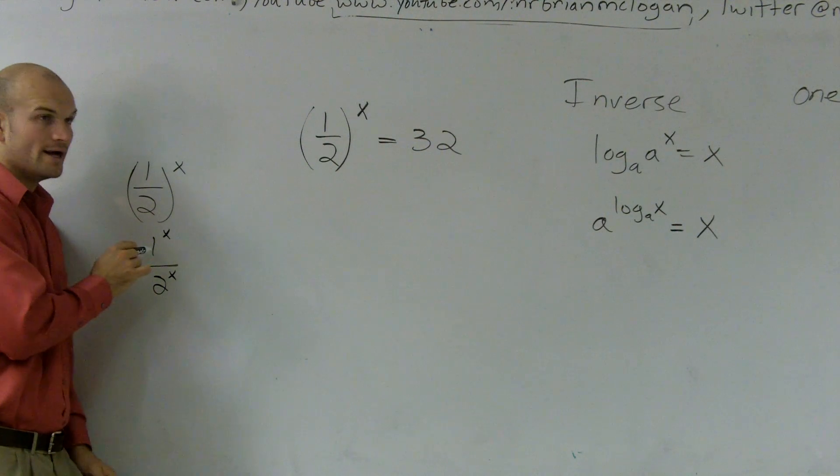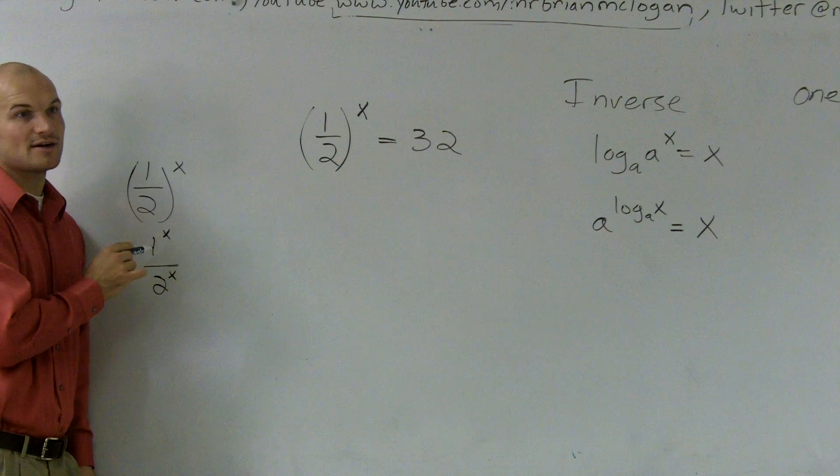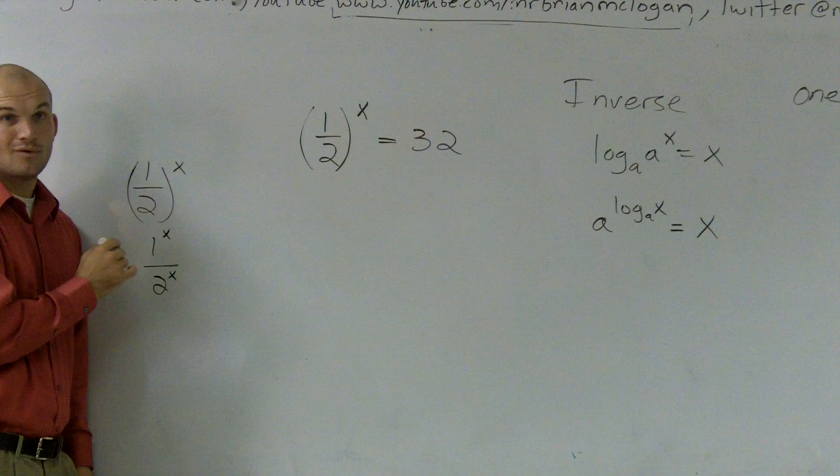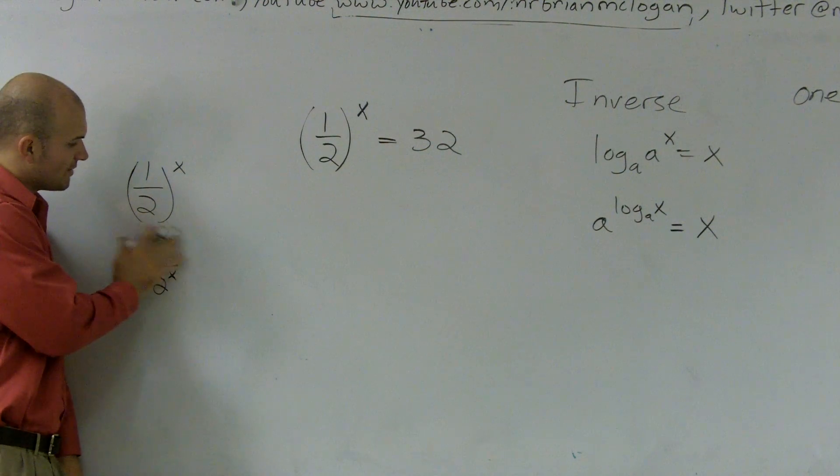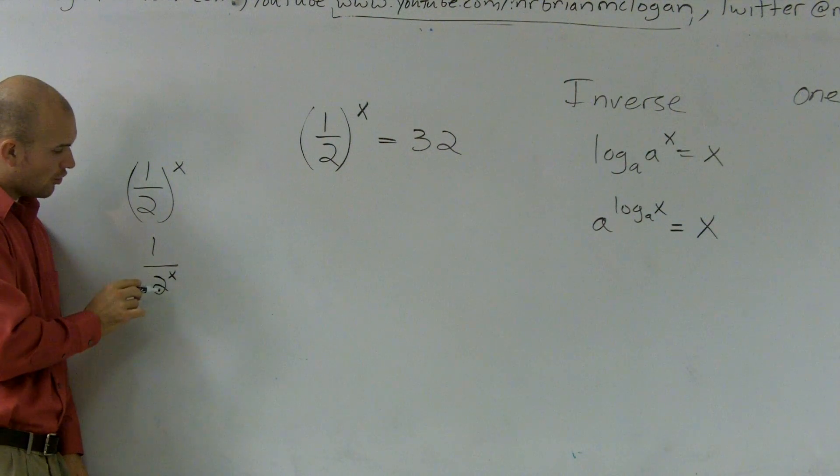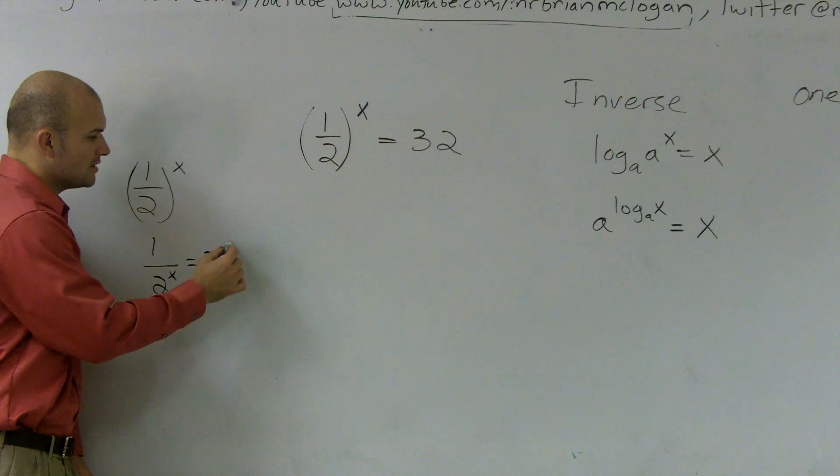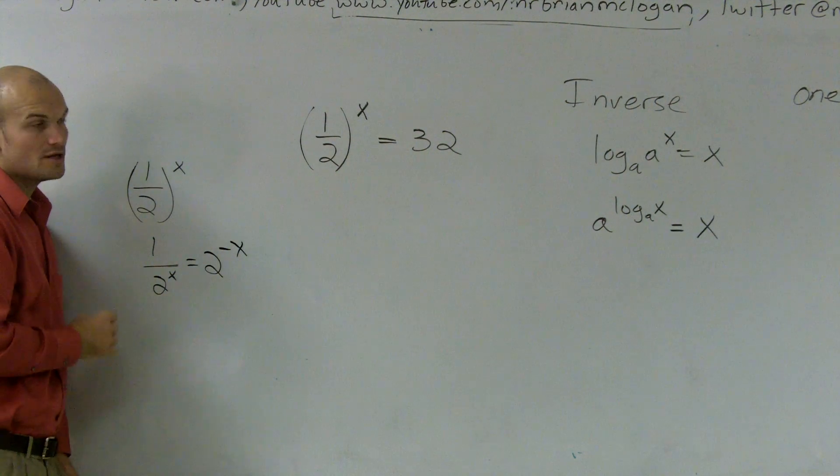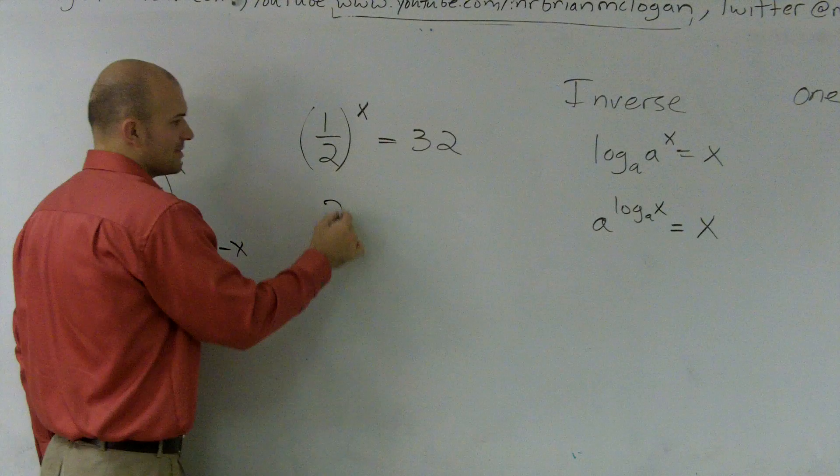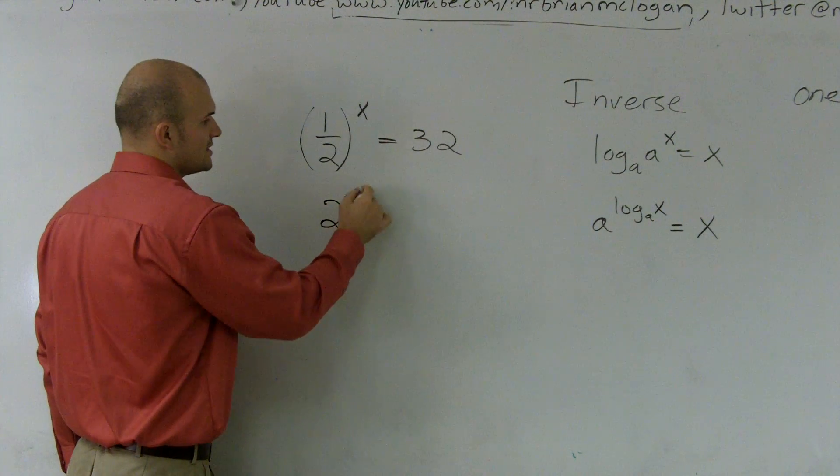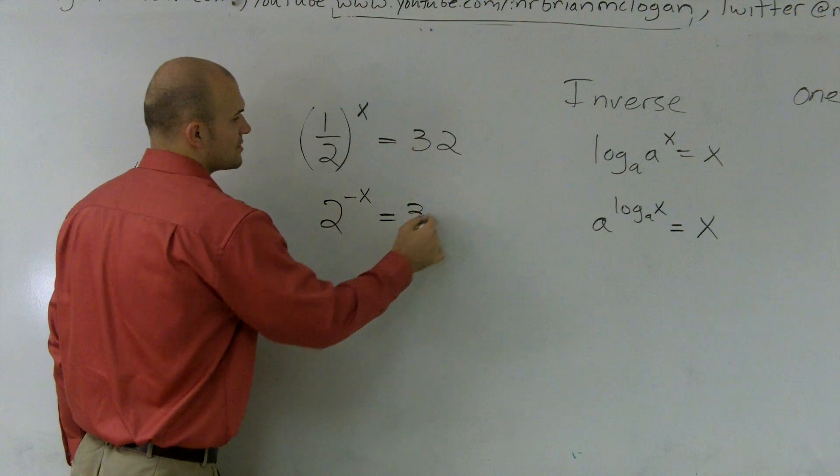Well, 1 multiplied by itself x number of times, it doesn't matter, it's always going to equal 1. So really what I have is 1 over 2^x, which is the same thing as 2^(-x). So what I'm going to do for this problem is say I want this to be 2^(-x) = 32.